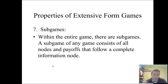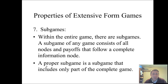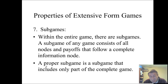The final point concerns subgames, which come into play with the subgame perfect Nash equilibrium. A subgame consists of all nodes and payoffs that follow a complete information node — meaning there can't be a case where a player doesn't know what happened. As long as the player has perfect information starting at a decision point, that is a subgame of the whole game. A proper subgame is a subgame that includes only part of the complete game — the entire game itself is considered a subgame, while a proper subgame is just not the entire game. There are times I'll ask you to count the subgames so we're all speaking the same language.